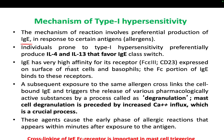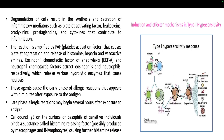IgE has very high affinity for its receptor CD23, expressed on the surface of mast cells and basophils. The Fc portion of IgE binds to this receptor. When the allergen first enters the body, a normal immune response occurs: APCs present the allergen to CD4 cells, which signal B cells to produce memory cells and plasma cells.